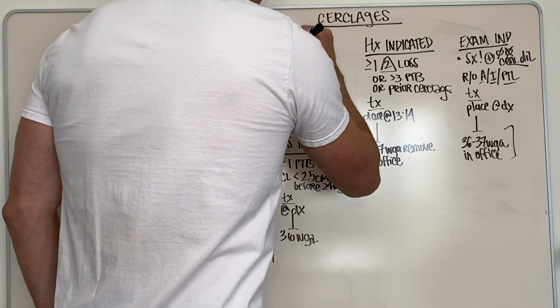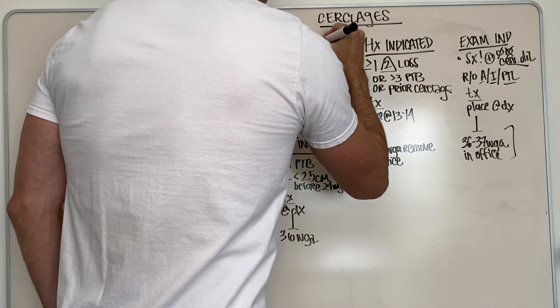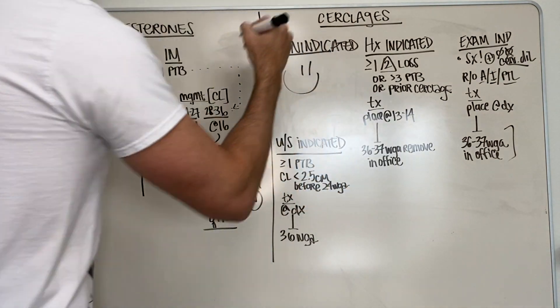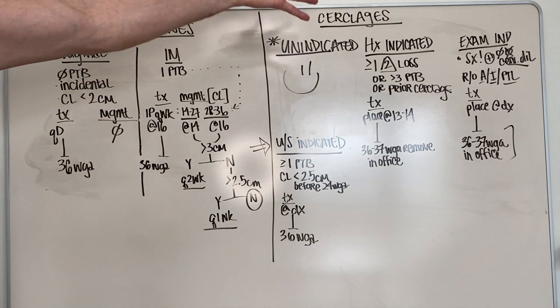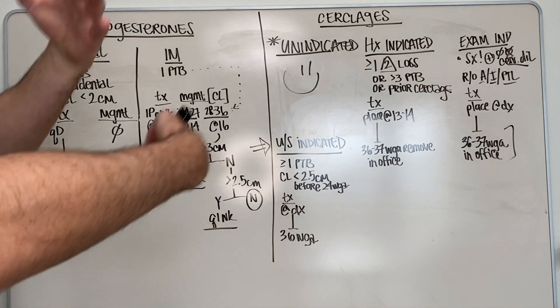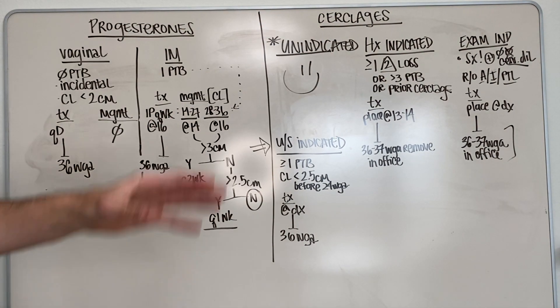The fourth one though is unindicated, as Dr. S would say. So there are three main types: history, exam, and ultrasound. And there's also a fourth one, which would be the reasons why cerclages are placed outside of those three categories.